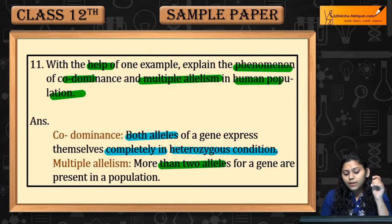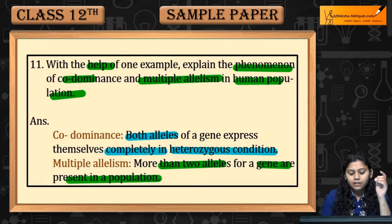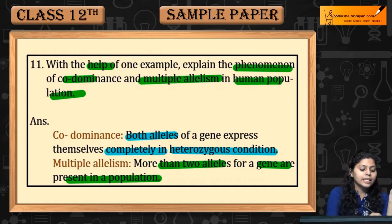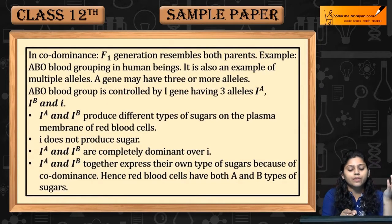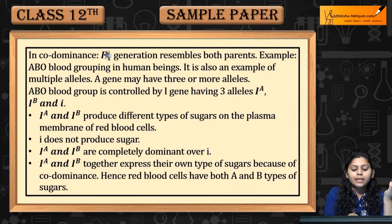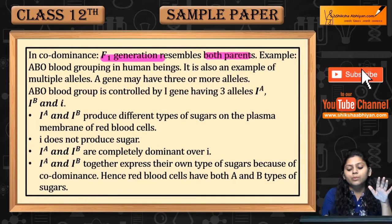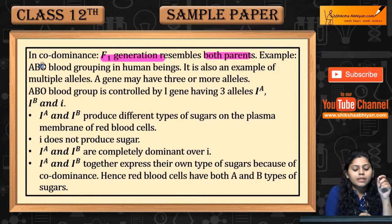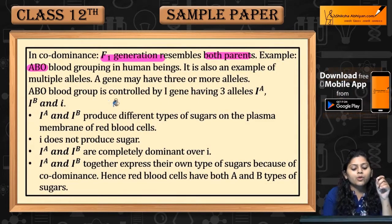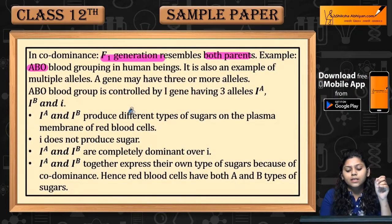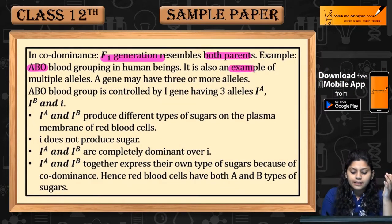Multiple Allelism में more than one allele for a gene are present in a population — एक gene के लिए ज़्यादा alleles present होते हैं. Codominance में F1 generation resemble करती है with both parents. Example is of ABO Blood Grouping in human beings.